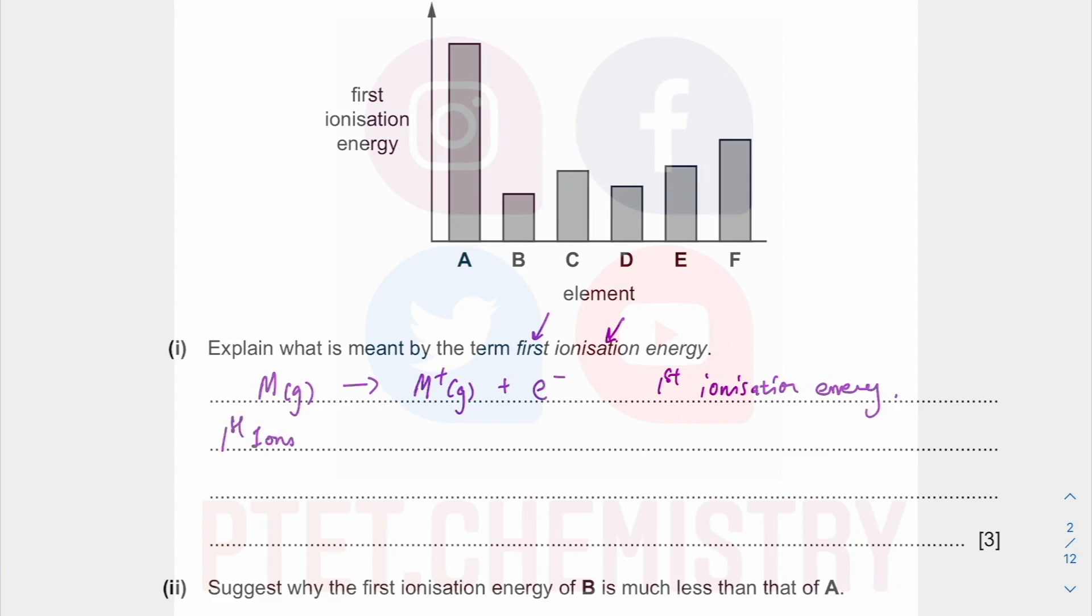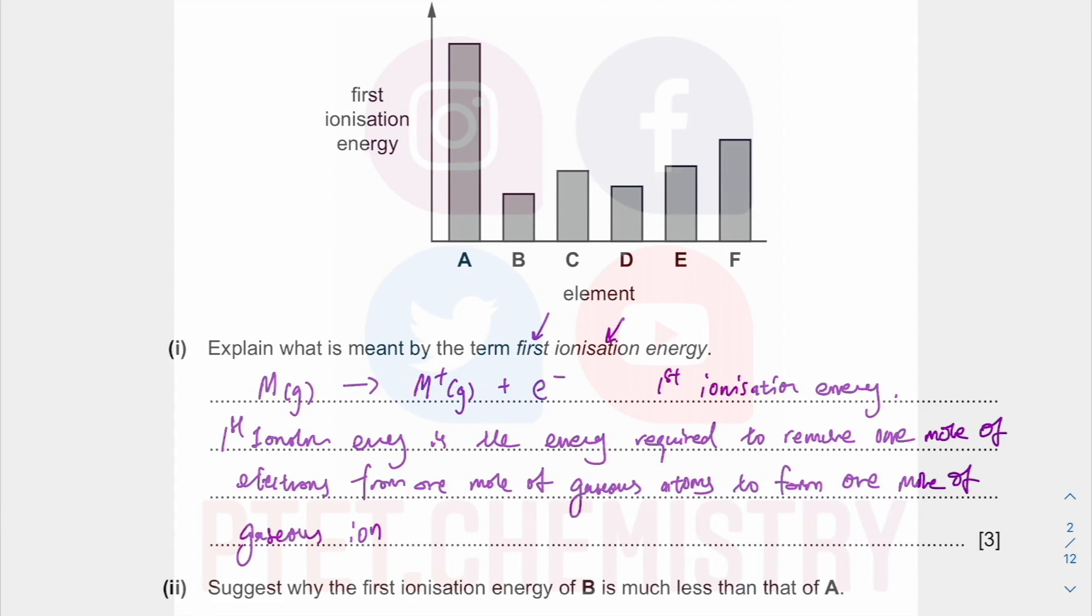So first ionization energy is the energy required. So you're removing electrons, so definitely it's endothermic. You definitely require energy to remove one mole. The one mole of electrons are very important. Where are you removing it from? I think I misspelled that. From one mole of gaseous atoms. So you remove it from atoms in gaseous state, and you remove it from one mole of it to form. What are you forming? One mole of gaseous ion. But what kind of ion are you forming?